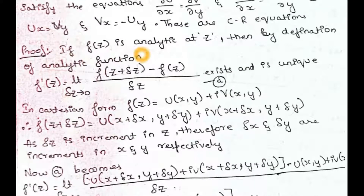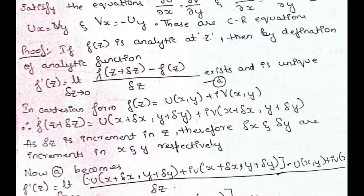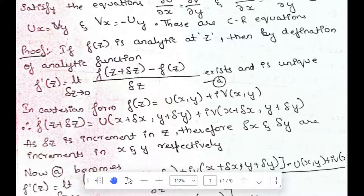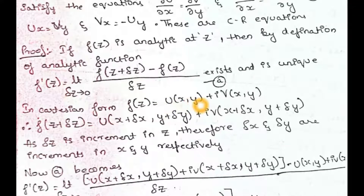Now we have to prove it. If f(z) is analytic at z, then by the definition of analytic function, f'(z) = limit as δz→0 of [f(z + δz) - f(z)] / δz exists and is unique. In Cartesian form, we define f(z) = u(x, y) + iv(x, y).